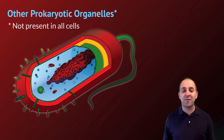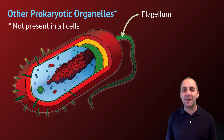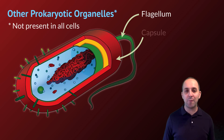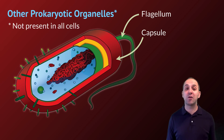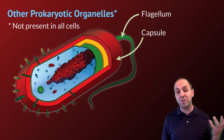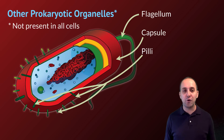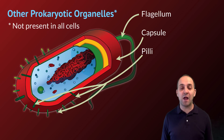Prokaryotes also have other organelles not necessarily present in all cells. For instance, this image of a bacterium very similar to E. coli has a flagellum that assists it in moving around its environment. It also has a capsule which covers and helps protect it, particularly from things like a mammalian immune system. And it has structures called pili which help it attach to and adhere to surfaces. These structures appear in different types of bacterial cells, but are by no means universal among all prokaryotic cells.